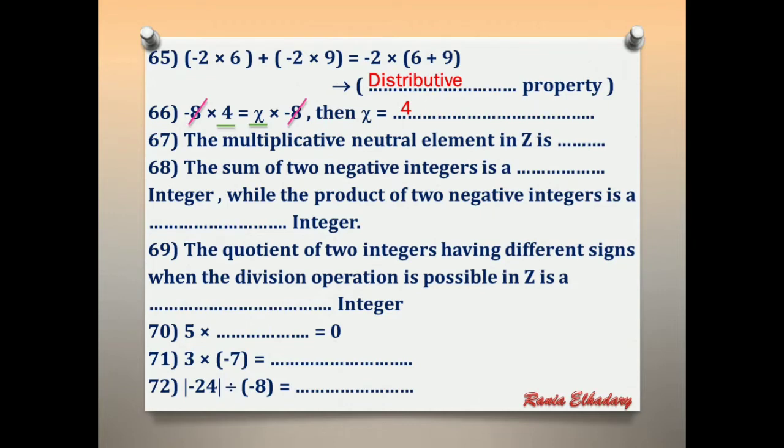Number 67: the multiplicative neutral element in Z. Multiplicative neutral has another name — multiplicative identity. The multiplicative identity in Z is 1.